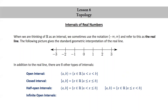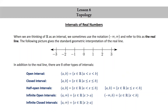Then we have two types of infinite open intervals: (a, ∞), the set of real numbers x such that x > a, and (−∞, b), the set of real numbers x such that x < b. And we have two types of infinite closed intervals: [a, ∞), the set of real numbers x such that x ≥ a, and (−∞, b], the set of real numbers x such that x ≤ b.